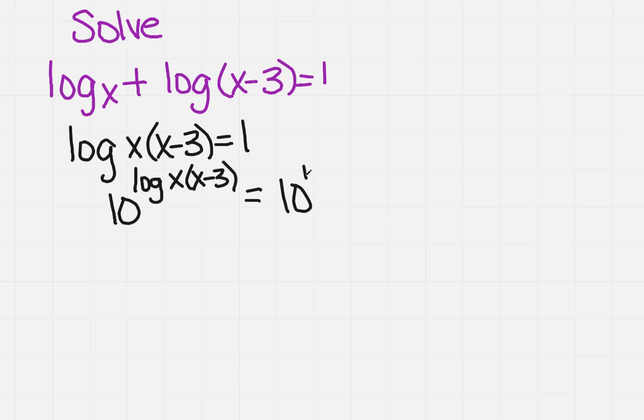Now, when I do that, remember on the left-hand side, all I'm going to be left with is the exponent. So this will be x times x minus 3 equals 10 to the first is just 10.